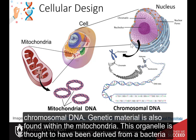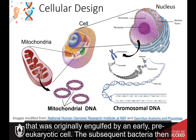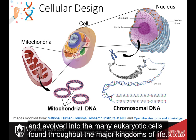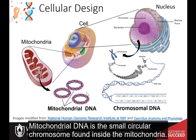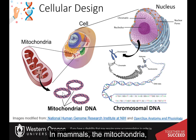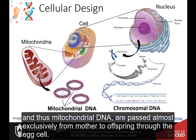This is known as chromosomal DNA. Genetic material is also found within the mitochondria. This organelle is thought to have been derived from a bacteria that was originally engulfed by an early pre-eukaryotic cell. The subsequent bacteria then became a required symbiont within the organism and evolved into the many eukaryotic cells found throughout the major kingdoms of life. Mitochondrial DNA is the small, circular chromosome found inside the mitochondria. These organelles have often been called the powerhouse of the cell, as energy in the form of ATP is created here. In mammals, the mitochondria, and thus mitochondrial DNA, are passed almost exclusively from mother to offspring through the egg cell.